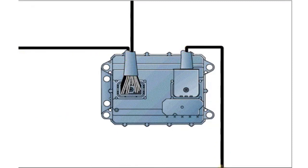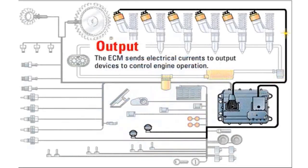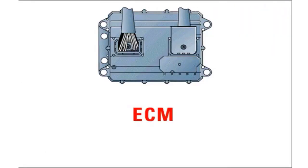It also stores engine operating information such as faults, events, and cumulative operating hours. The personality module is the software in the ECM which contains the specific maps that define power, torque, and RPM of the engine. The ECM sends electrical currents to output devices.